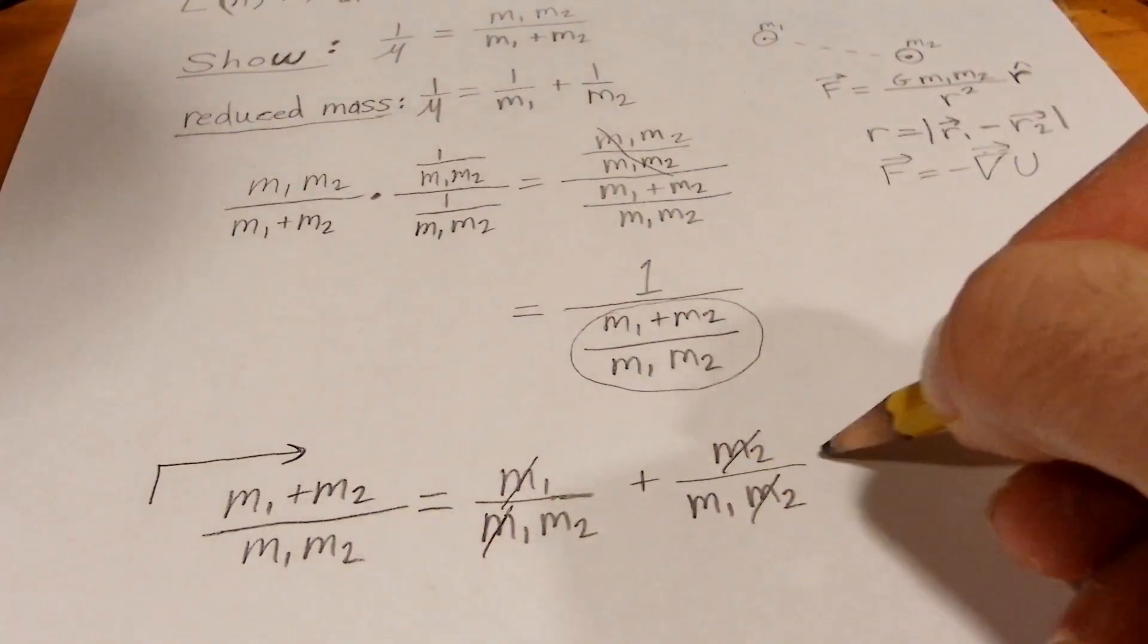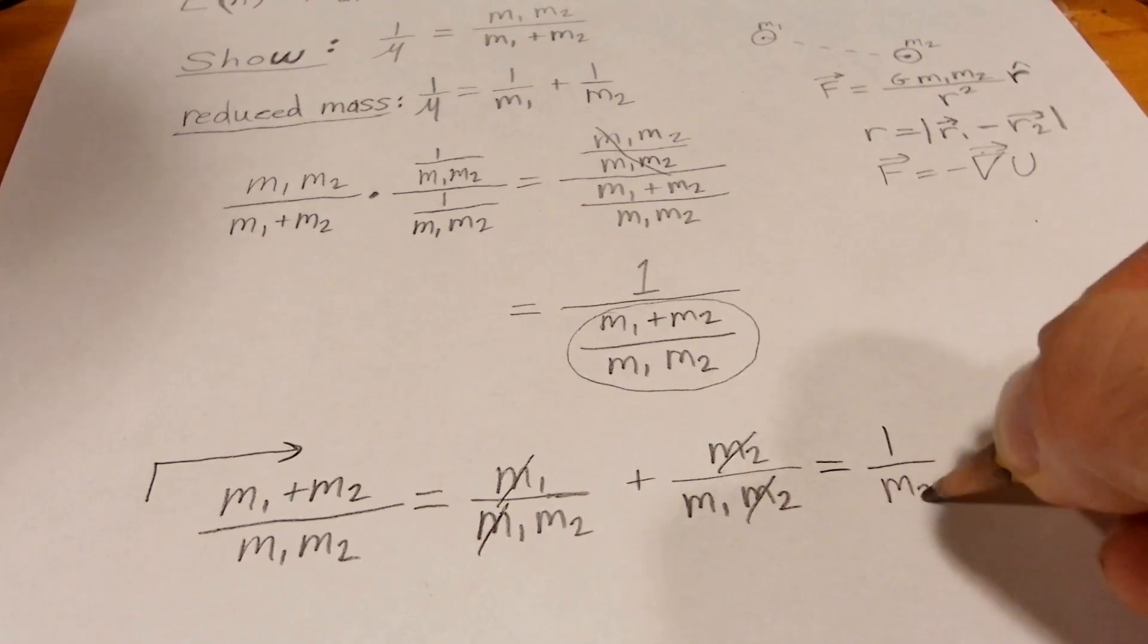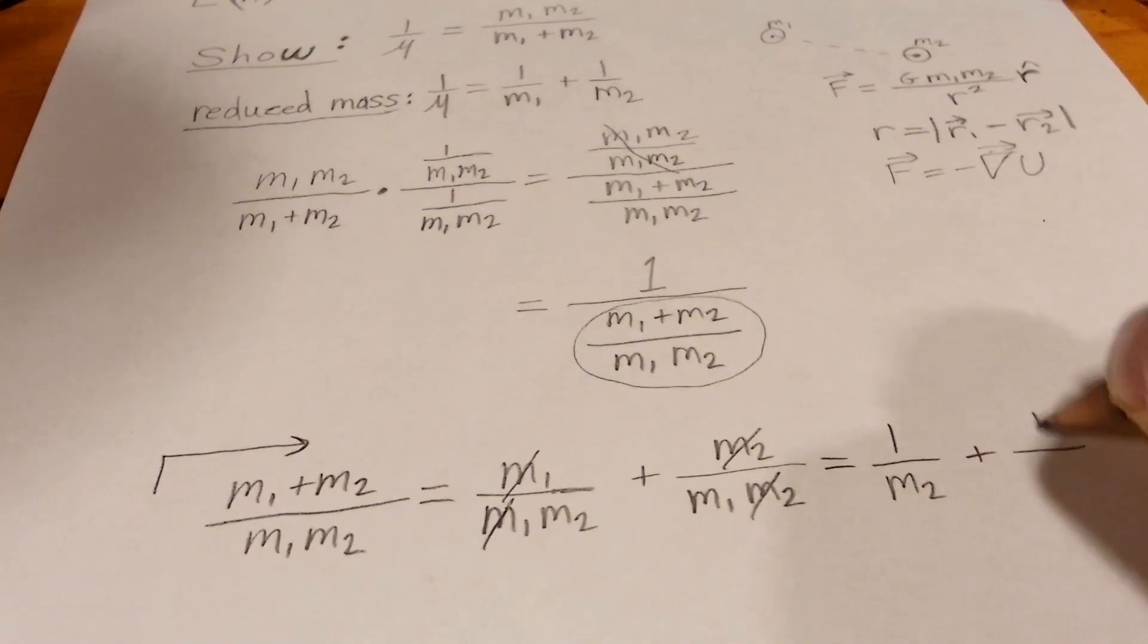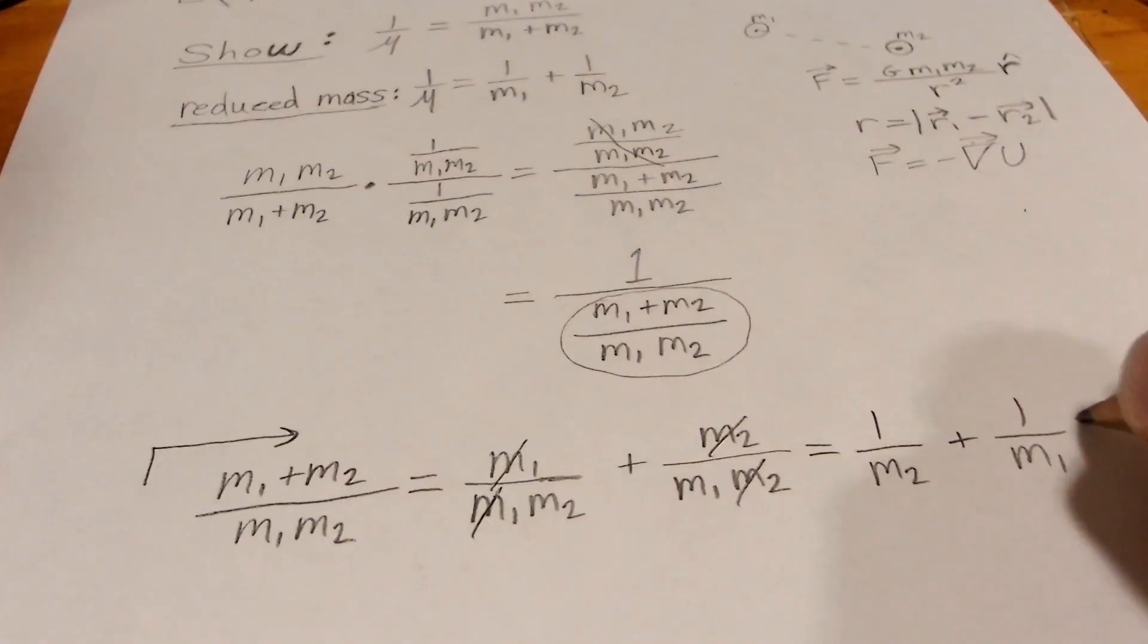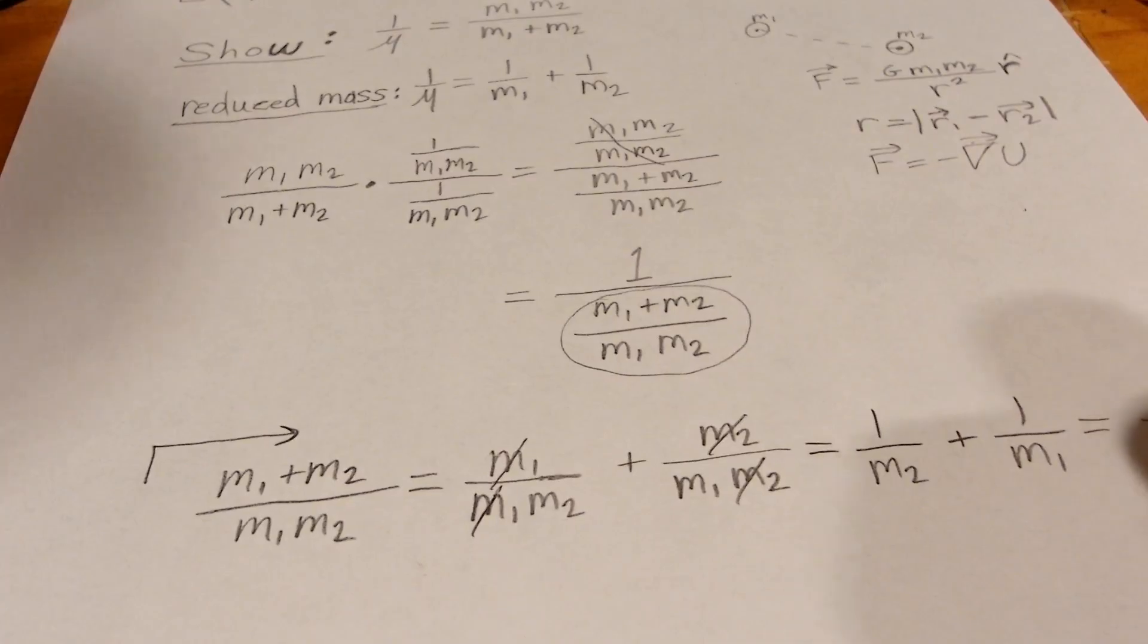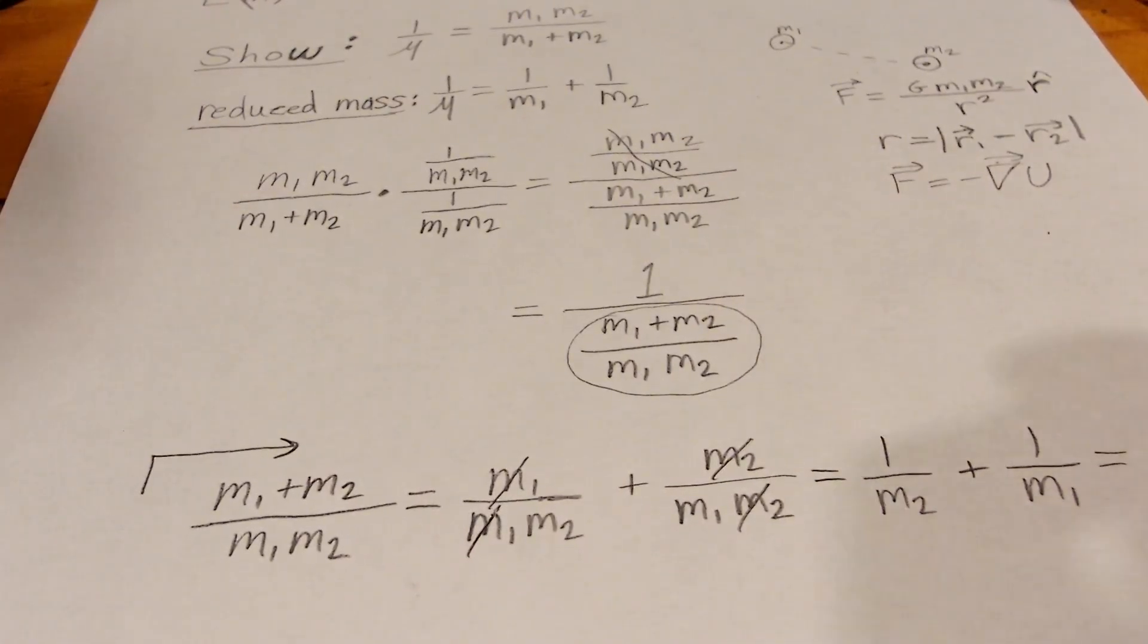and we're going to get 1 over M2 plus 1 over M1 and that is equal to one over mu which is the reduced mass.